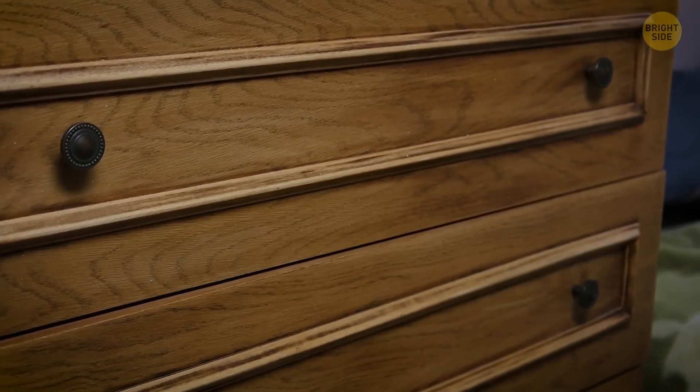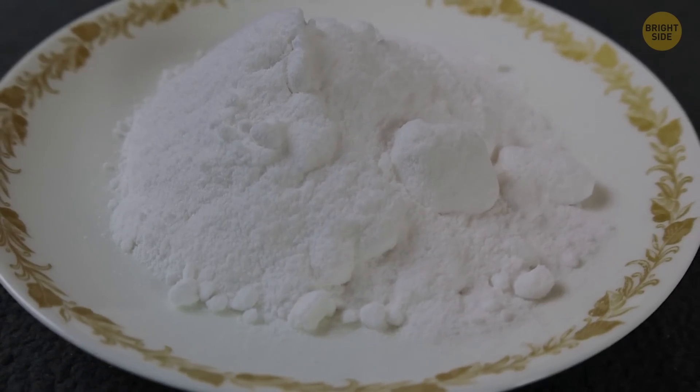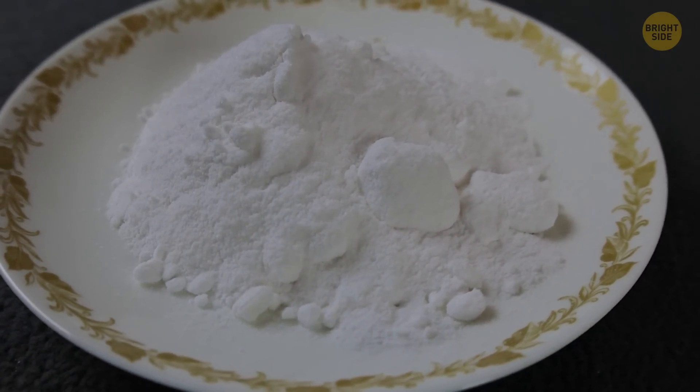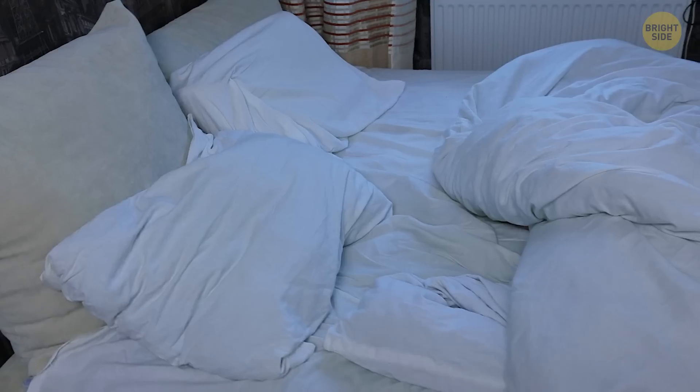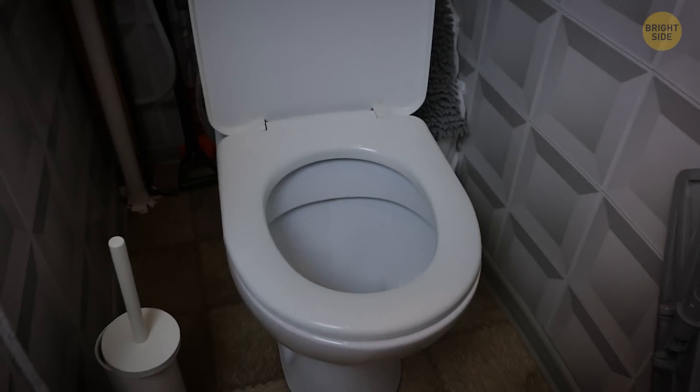Baking soda also removes foul odors on furniture and carpet, as it gradually absorbs all the acidic odors within a covered area. Baking soda is a pH neutralizer, which means it absorbs smells that are acidic in nature. This includes most of the nasty smells we find throughout our living areas.